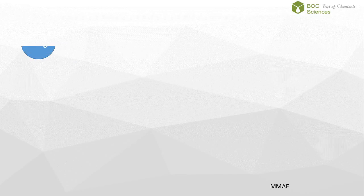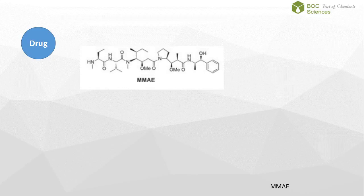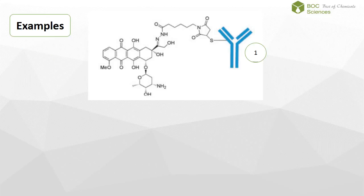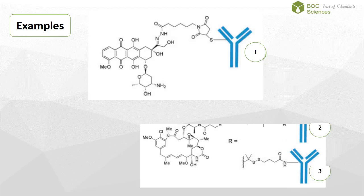The drug payload on the ADCs currently undergoing human clinical evaluation includes monomethyl auristatin E (MMAE) and monomethyl auristatin F (MMAF). The structure of doxorubicin attached to an antibody via a hydrazone linker forms compound 1. The structures of DM1 and DM4 connected to the antibody via a disulfide linker form compounds 2 and 3.